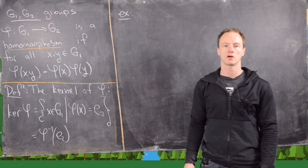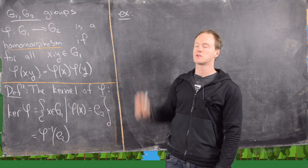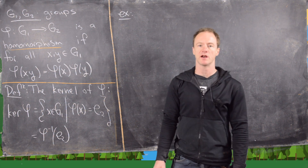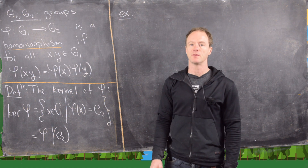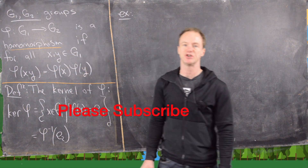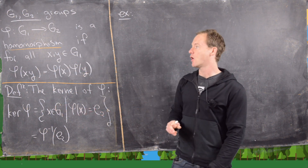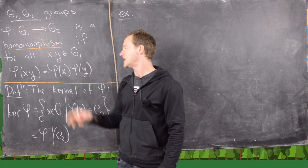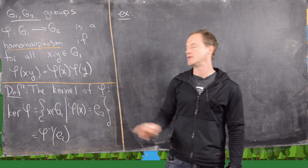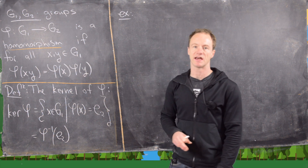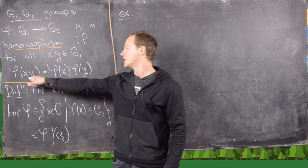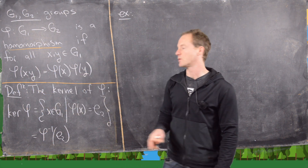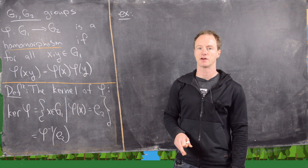In this video we're going to look at the notion of a kernel of a homomorphism. Let's recall what a homomorphism is. We have two groups G1 and G2, and a function between them which we'll call phi, going from G1 to G2. It's called a homomorphism if for all x and y in G1, phi applied to xy equals phi applied to x times phi applied to y. The multiplication on the left happens in G1, and on the right it happens in G2.